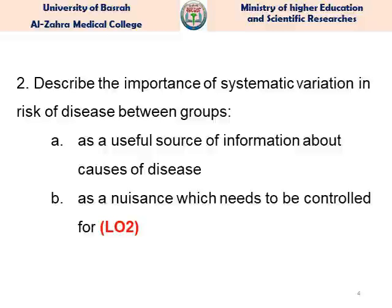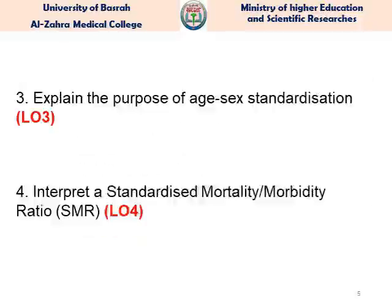We need to understand what we mean by this objective. Learning Objective 3: Explain the purpose of age-sex standardization. We will discuss what we do with age and sex standardization as a systematic tool. Objective 4: Interpret a Standardized Mortality or Morbidity Ratio, which we call SMR. We will define what SMR means, why we use it, what its implications are, and how to calculate it. The calculation details will be covered in the small group session.